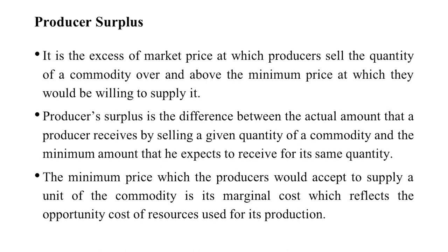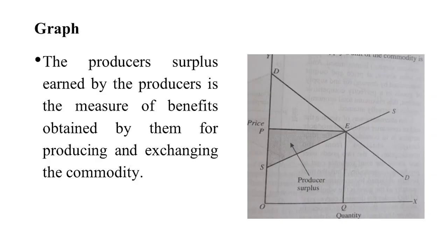As I told you, producer surplus is the difference between the actual amount a producer receives by selling a given quantity of a commodity and the minimum amount that he expects. This difference shows the producer surplus. In the next slide, the shaded area shows the producer surplus and how it works — I am going to explain that.